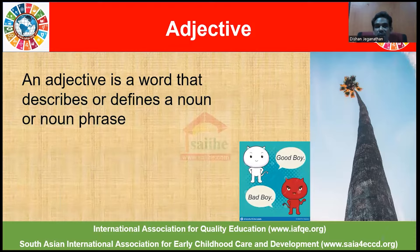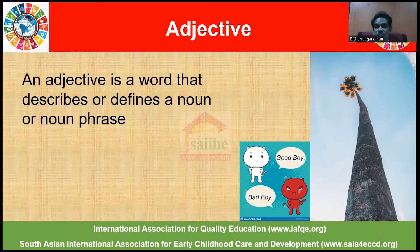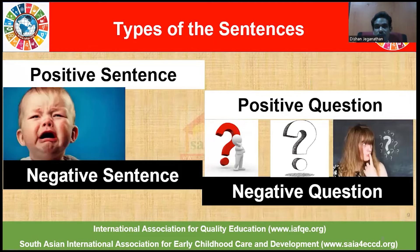An adjective is a word that describes or defines a noun or noun phrase. For example, if we take a flower, we could describe it by saying: beautiful flower, small flower, red flower, and so on. So these words actually describe the characteristics of a flower. Sentences can be classified into positive sentence, negative sentence, positive questions, and negative question.